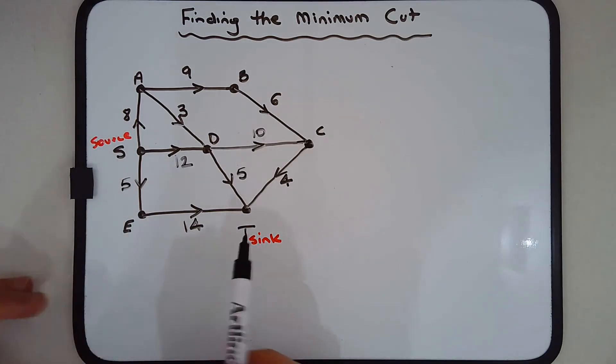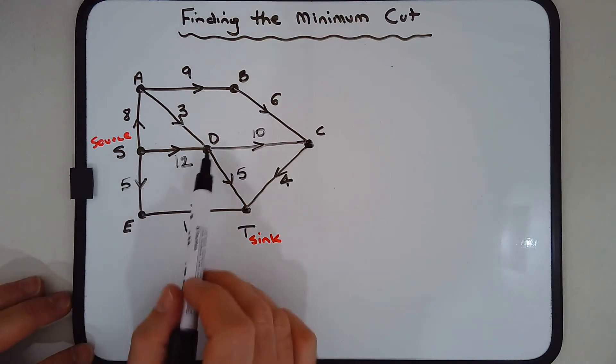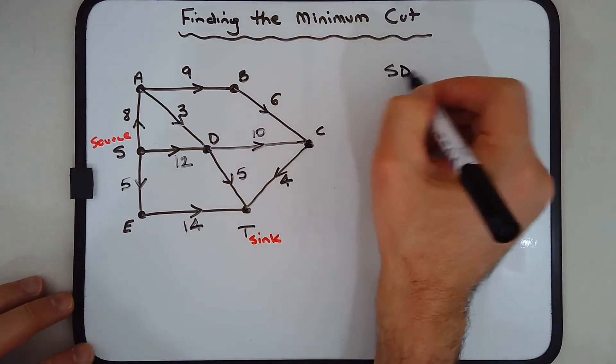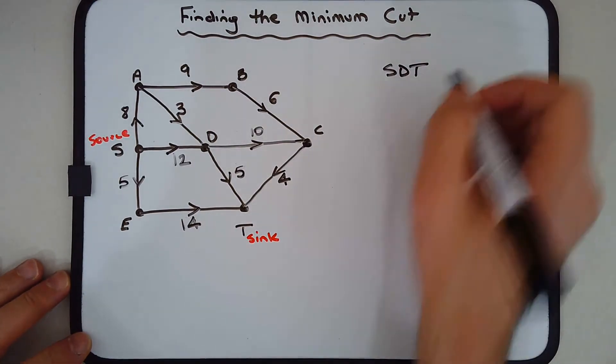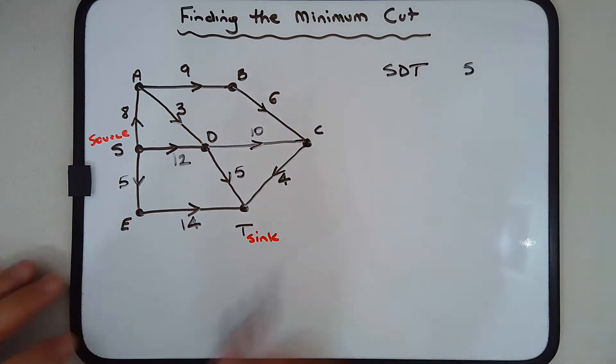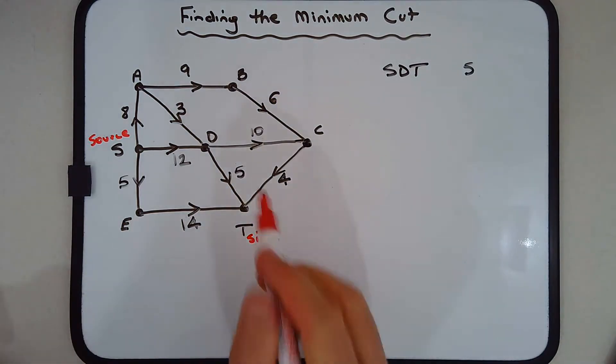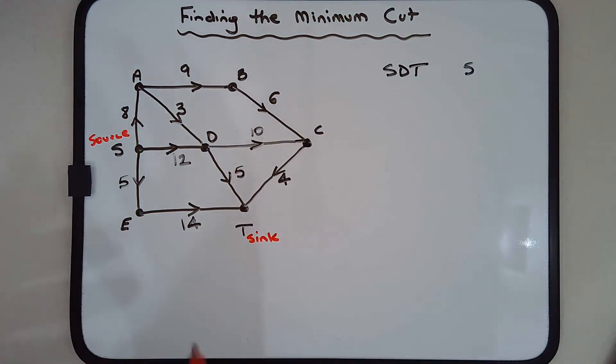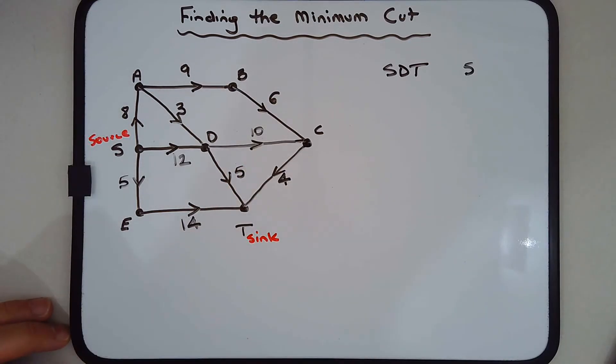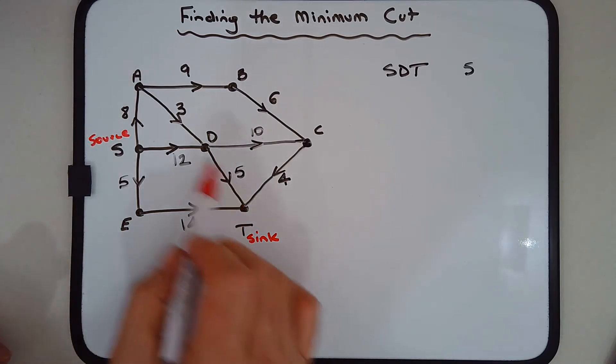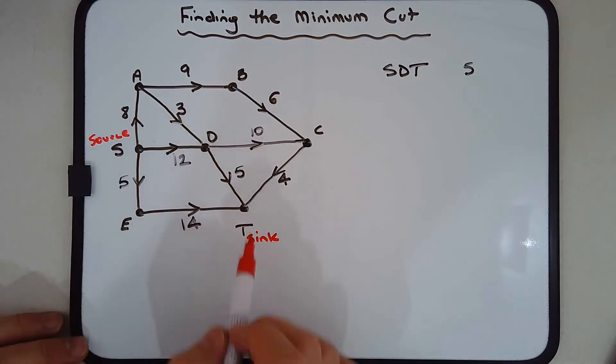The simplest way I can see to get from source to sink is SDT, using the minimum number of edges. SDT has a capacity of 5 because the 5 here represents the weakest link in the chain - the chain is only as strong as the weakest link. If the weakest edge is 5, that determines the capacity of the entire path SDT.